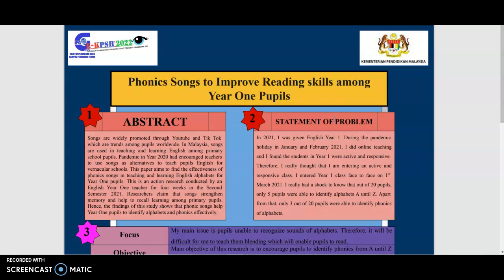Therefore, I was thinking I'm entering an active and responsive class. But I had a shock on 1st March 2021 when I had face-to-face class. I observed that only 5 pupils were able to identify the alphabets from A until Z, and only 3 out of 20 pupils were able to identify phonics of the alphabets.